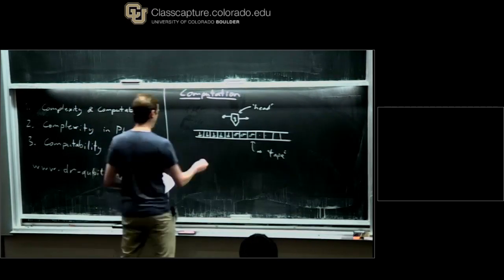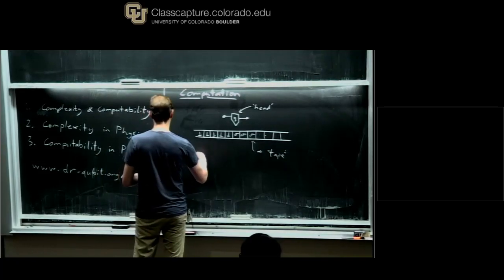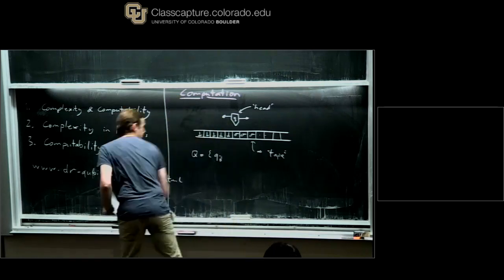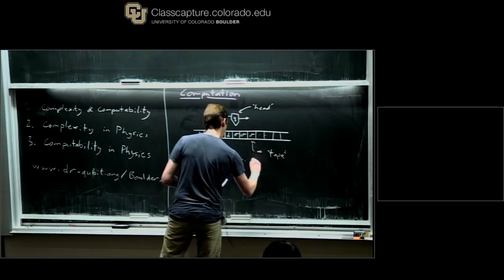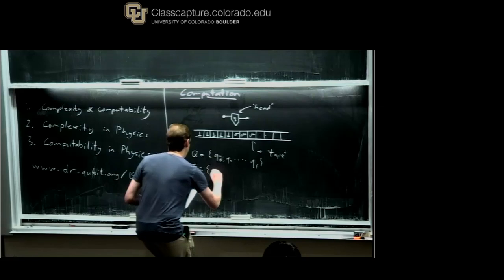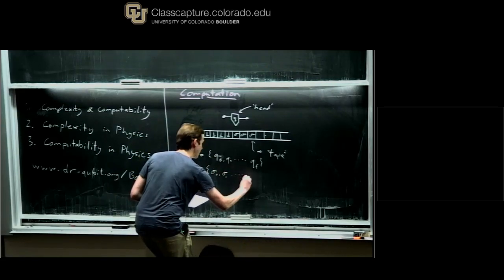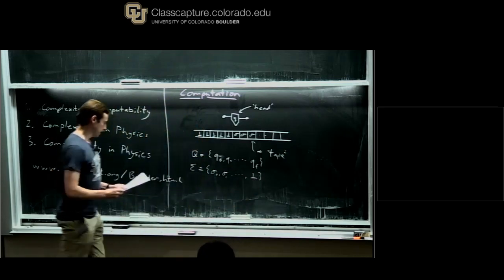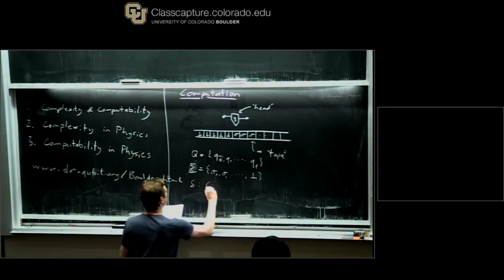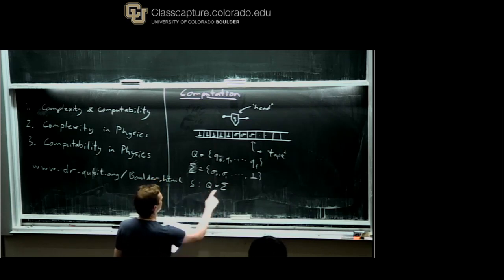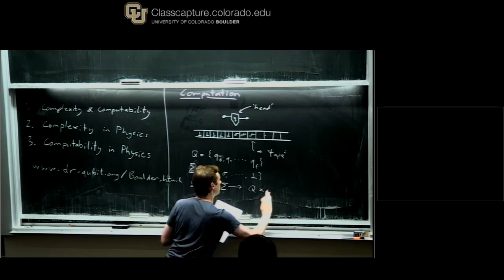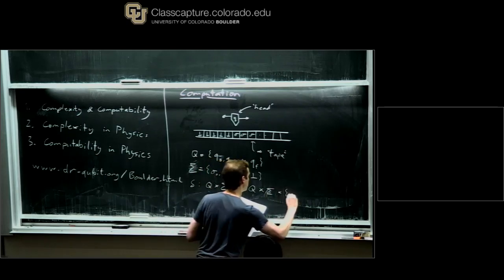To define this machine, we have some finite set of states Q0, Q1, ..., Qf — which plays a special role — and then we have some finite set of symbols on the tape: sigma zero, sigma one, et cetera, and some special blank symbol. Then we have some rules that tell us, given a current internal state and the symbol we're currently reading, what new symbol do we write, what new state do we transition to internally, and do we move left or right.